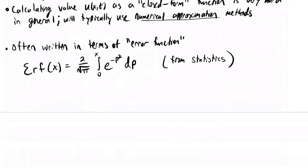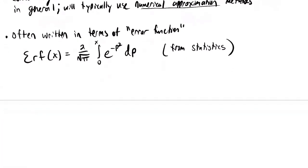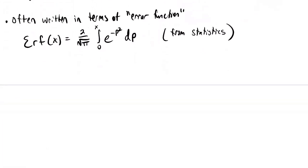The error function is a very important object in statistics, related to normal distributions. If you're familiar with normal distributions it's worth exploring this connection, as it's a deep and interesting link between PDEs and probability theory.